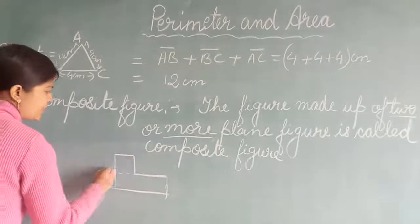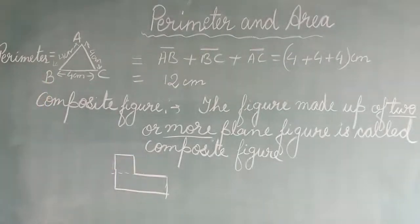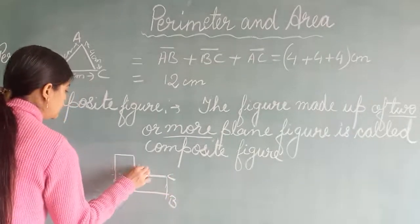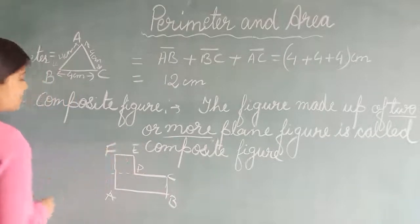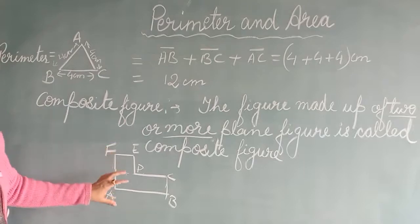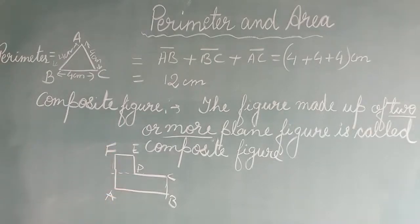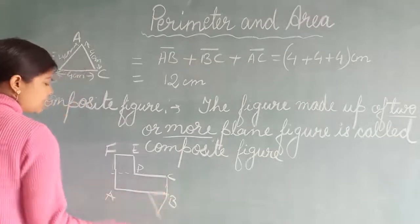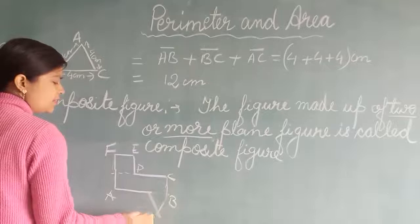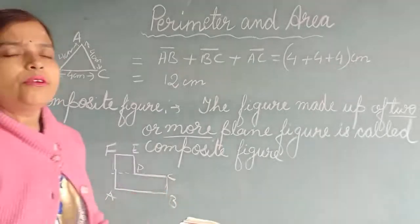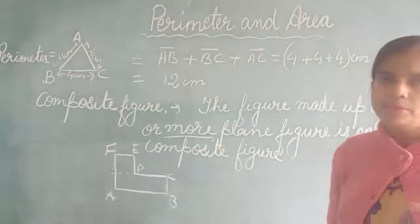This is the square part and this is the rectangle part. So this figure, A, B, C, D, E, F is a composite figure which is made up of a square and a rectangle. It can be made up of three figures also — you can put a triangle over there. So a figure which is made up of two or more plain figures is known as a composite figure.